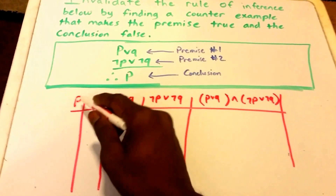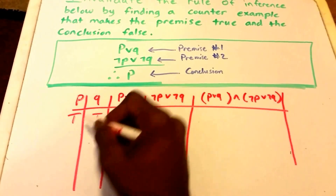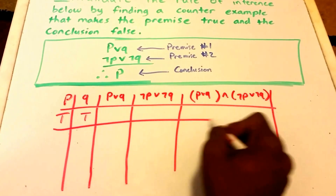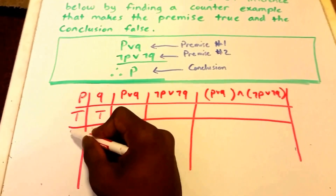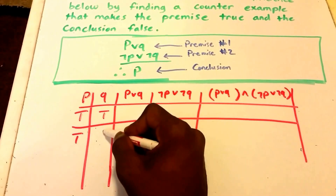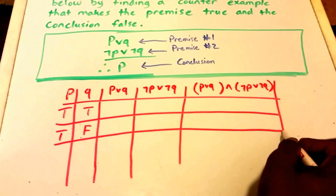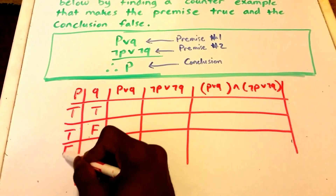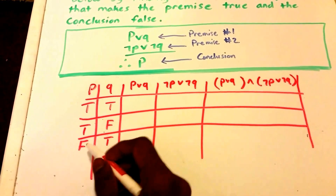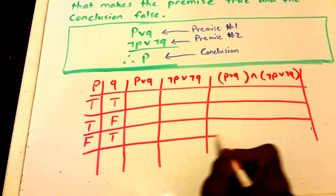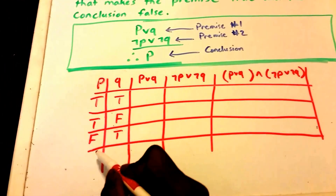So now our P could be true and our Q could be true. We could have P is true and Q is false. Then we could have P is false and Q is true. And then they both can be false.